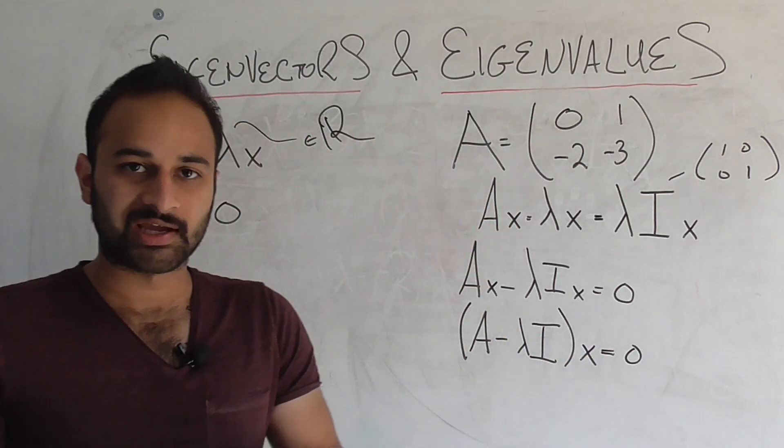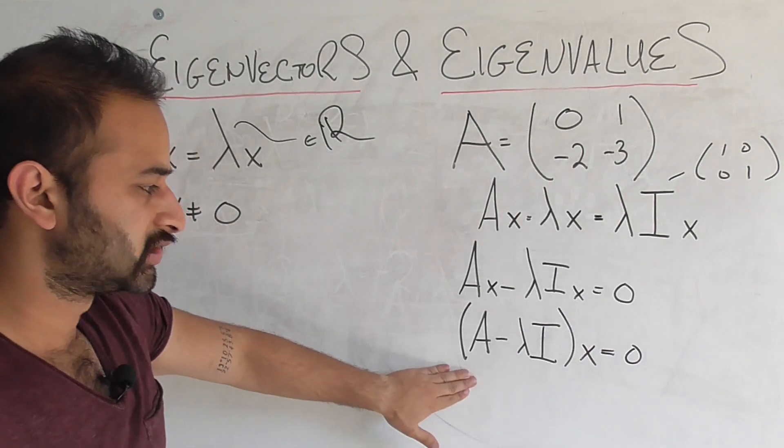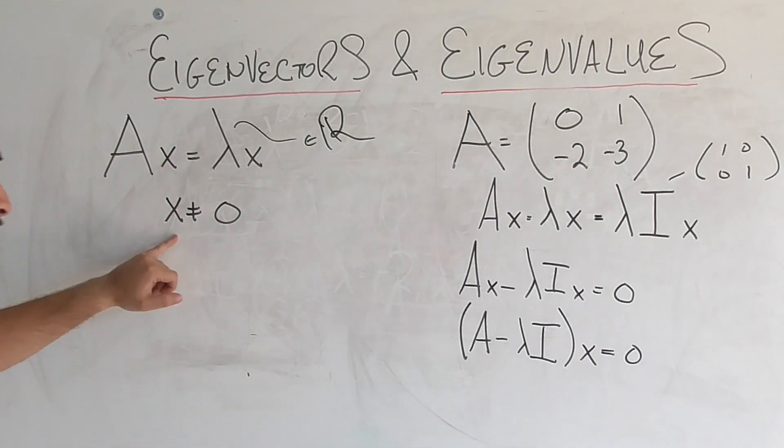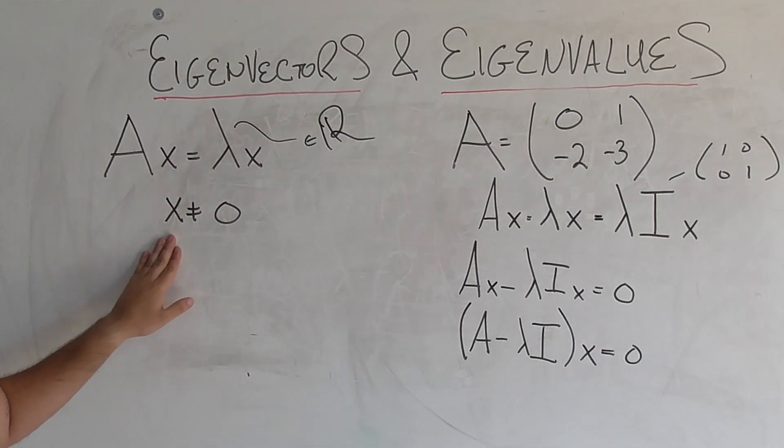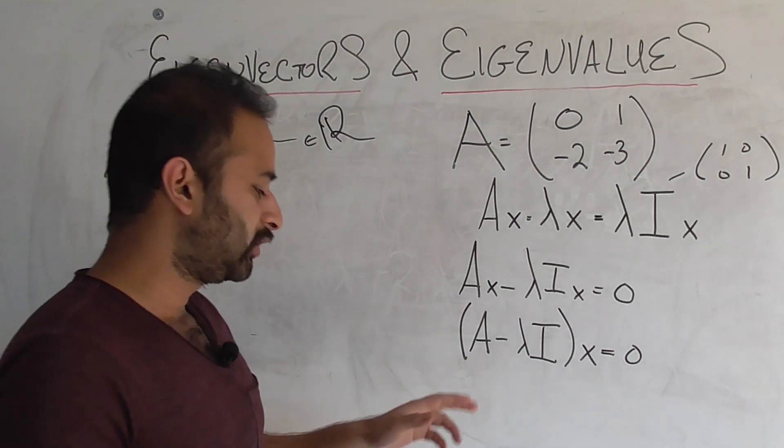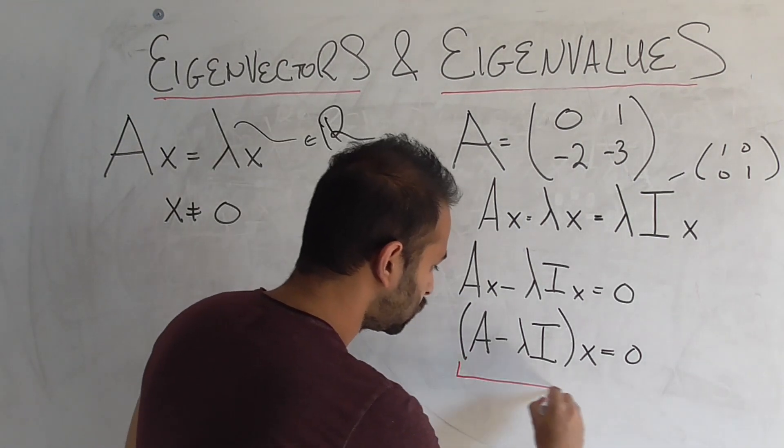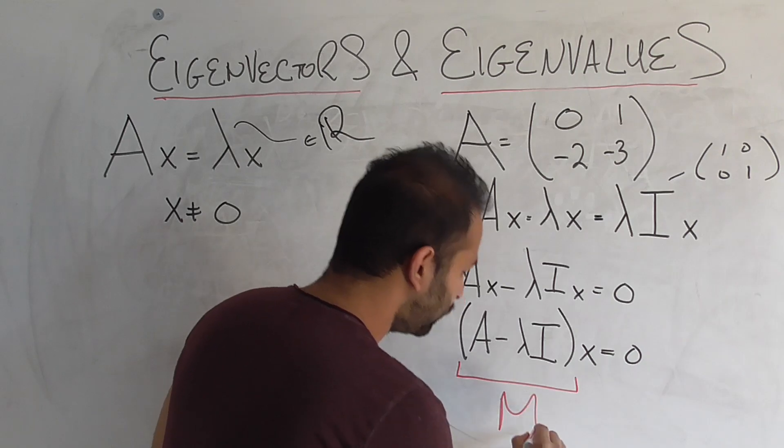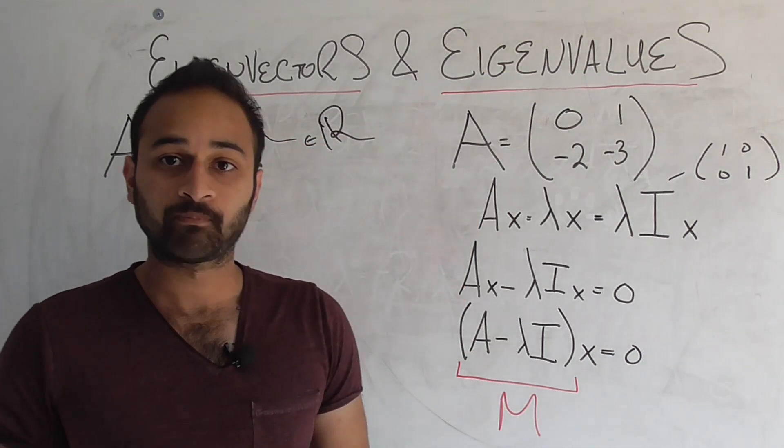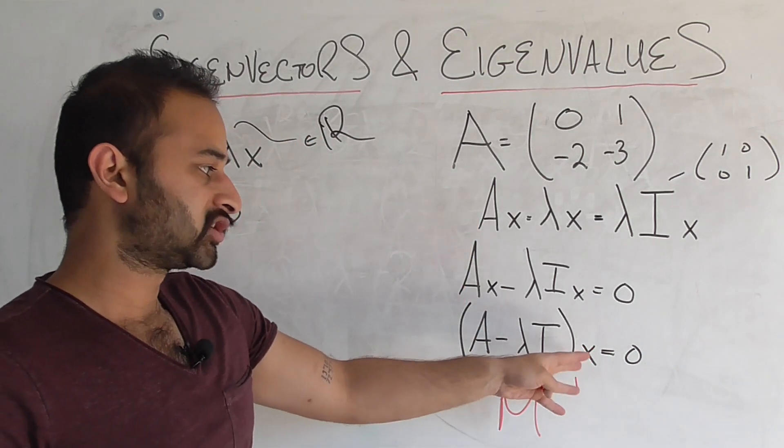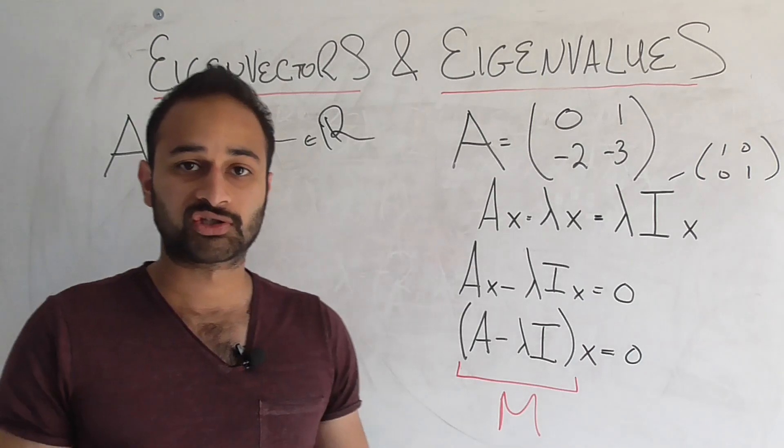Now let's pause for a second to think about what this equation means. Remember one key fact, that x is not equal to the 0 vector, okay? We assume that right here. So that means that this new matrix we've devised, M, let's say, where M is equal to A minus lambda I, has some vector x which is not equal to 0 in its null space or its kernel.